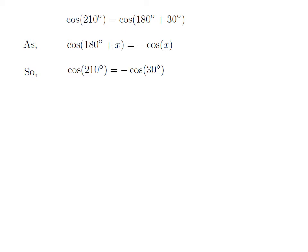Let us apply the above identity for cosine of 210 degree. Here, x is 30 degree, so cosine of 210 degree is equal to minus cosine of 30 degree.